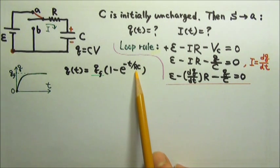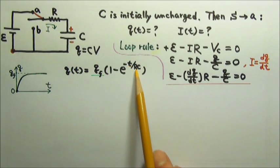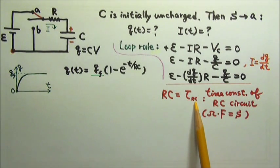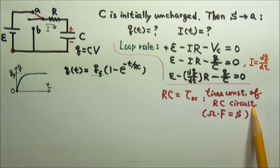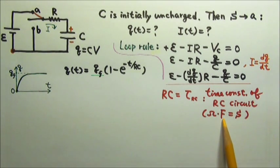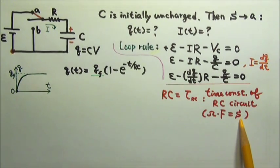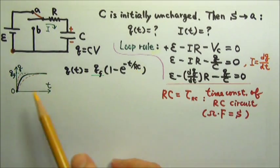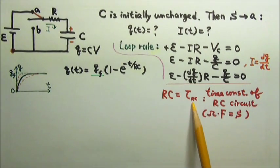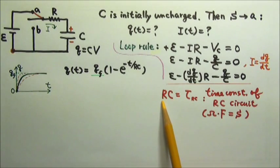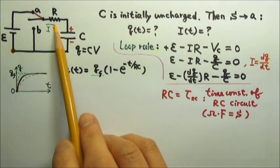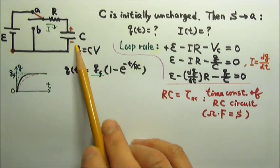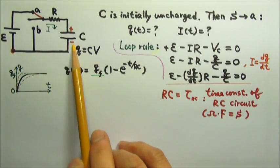Because an exponent should be dimensionless, this must be time divided by time — seconds divided by seconds. R times C is tau sub RC, the time constant of an RC circuit. Unit-wise, this is ohms times farads, which is seconds. The larger the time constant, the longer it takes to charge the capacitor; the smaller the time constant, the quicker it is. This makes sense: the larger the resistance, the smaller the current, so it takes longer to charge. The larger the capacitance C, the larger the charge Q, so it also takes longer to charge.